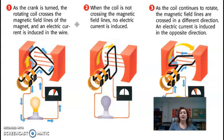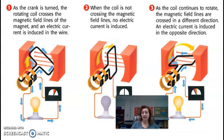When the coil is not crossing the magnetic field lines, no electric current is induced. See, the light bulb is not lighting up that time.